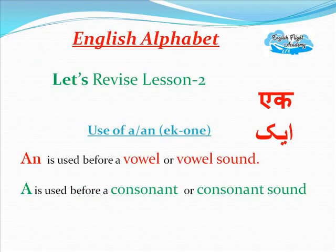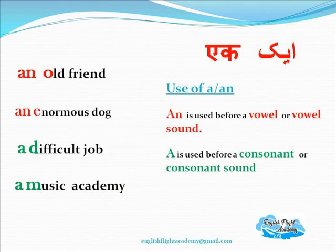Let's revise Lesson 2, which we learnt in the previous video — use of 'a' or 'an'. A or an means one. An is used before a vowel or vowel sound, and a is used before a consonant or consonant sound.